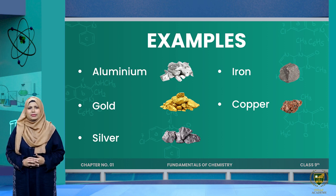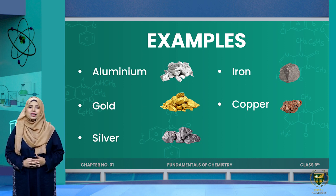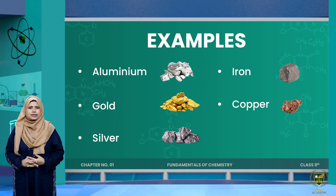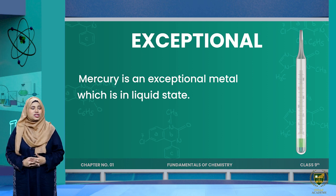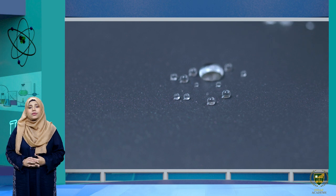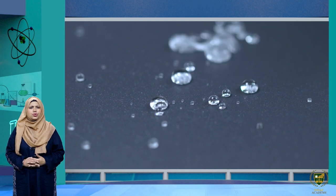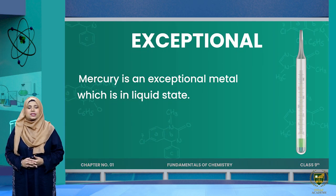Metals are important because the majority of elements that exist are metals. Most metals exist in solid form — as you can tell from all the examples discussed so far, they were all solids. However, one exception exists: mercury. Mercury is an exceptional metal which is in a liquid state; it is silver in color and you have seen it in thermometers. So mostly metals are solid, except mercury.